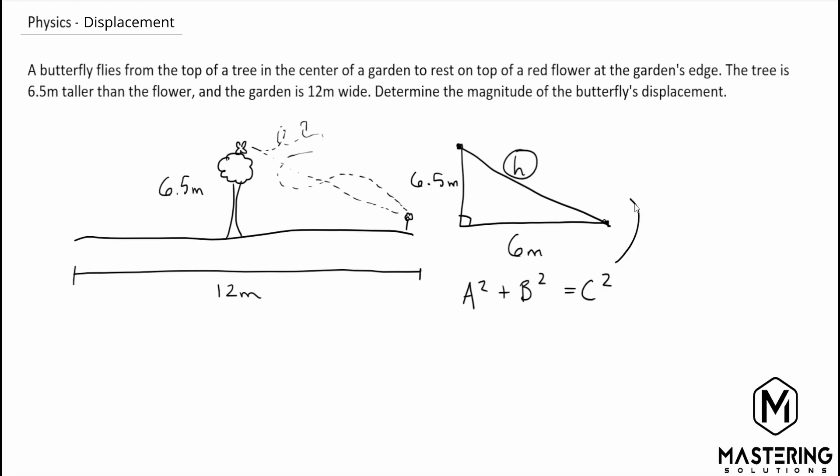So c is what we're looking for. That's the hypotenuse right here. So we know that a is 6.5 meters plus b which is 6 meters is equal to c squared.